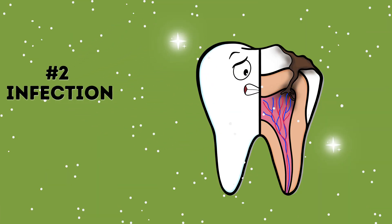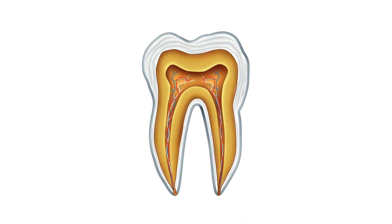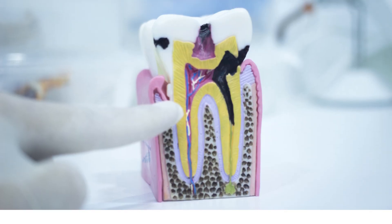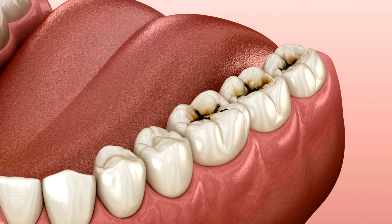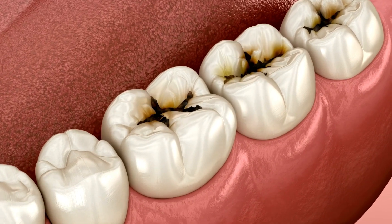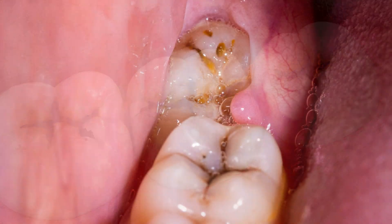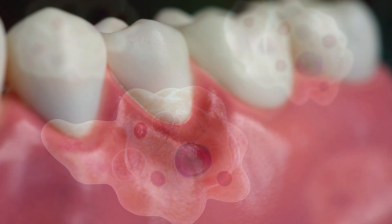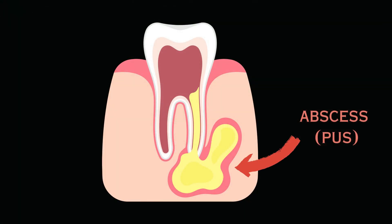Number two is infection. Tooth decay can advance deeper into the tooth, getting to the part where nerves and blood vessels are located. The decay can also spread to neighboring teeth, increasing the risk of cavities in other parts of the mouth. If tooth decay stays untreated, the bacterial infection can cause an abscess, which is a collection of pus within the teeth, gums, and surrounding tissues.